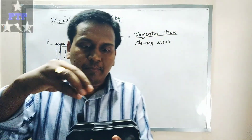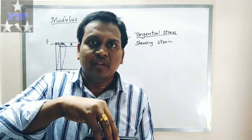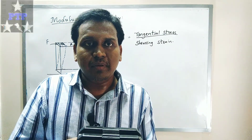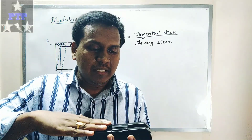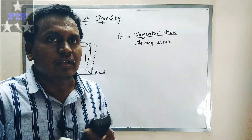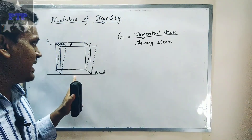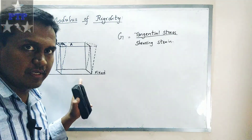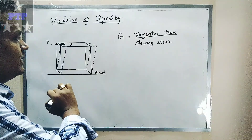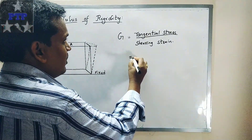If I apply a force vertically downward, the block will compress. If I apply force vertically upward, the block may be lifted. But here, the force is applied tangential to the surface. Since the bottom of the block is fixed, the block will bend — it will deform like this.